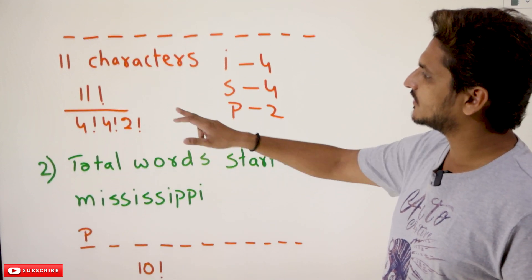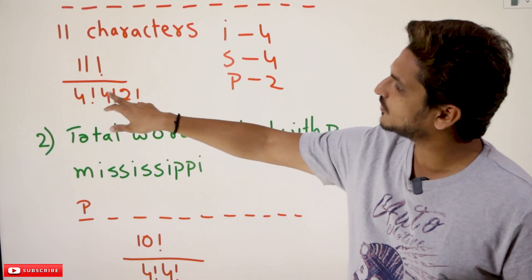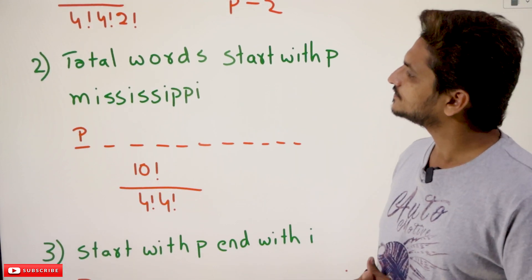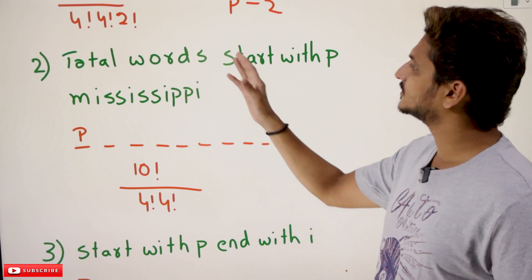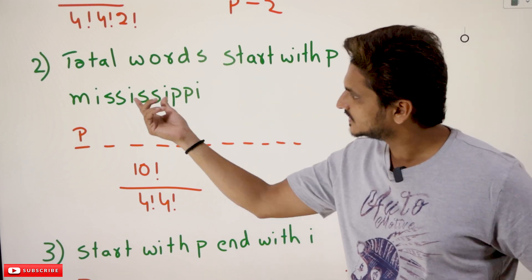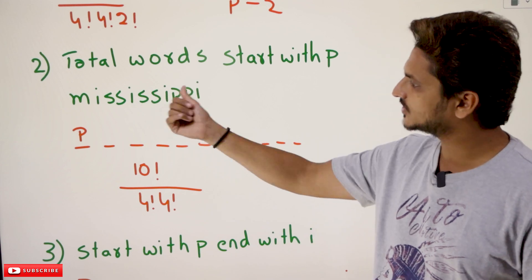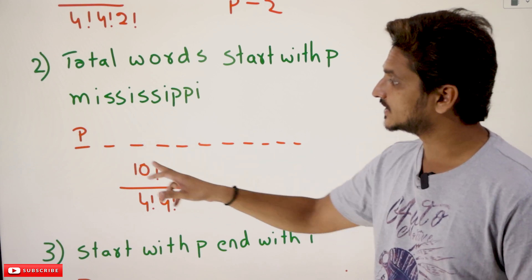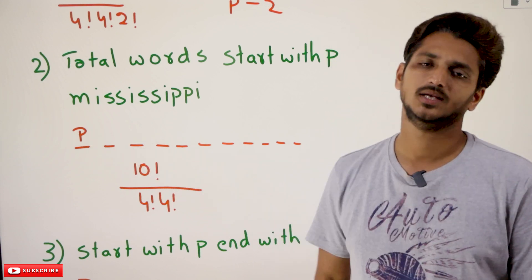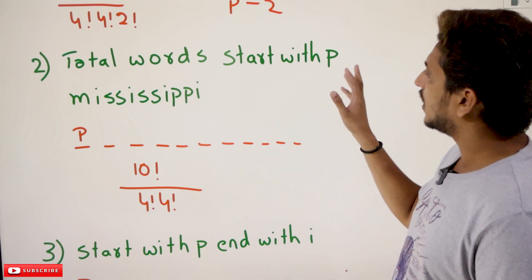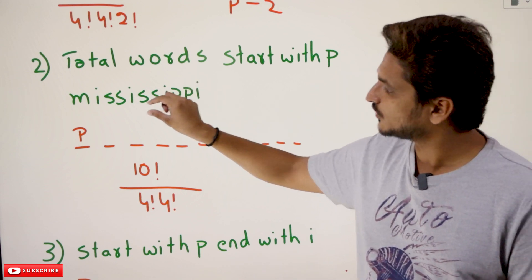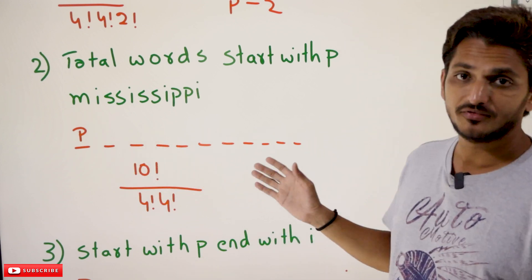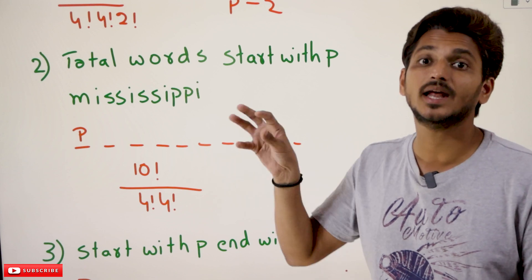Coming to the second example: total number of words that start with P using the same characters present in this word. Total 11 characters are there, 11 positions, but the starting position should be placed with P. So how many P's are there? We have two P's. If you place one of the P's here, the remaining 10 positions can be filled with the remaining 10 characters.